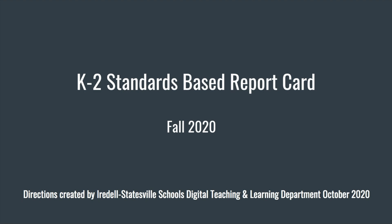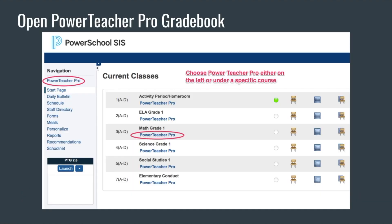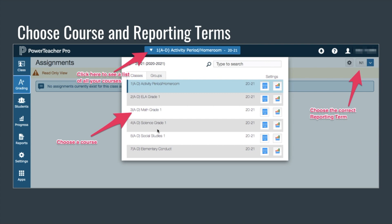Hey, it's Jackie and Susan here, and we're going to show you how to do your standards-based report card in PowerSchool. First of all, when you log into PowerSchool you're going to need to open your PowerTeacher Pro grade book. You can click on the blue PowerTeacher Pro link either on the side or under any of your classes. Make sure you're working in the course that you want to enter your scores.